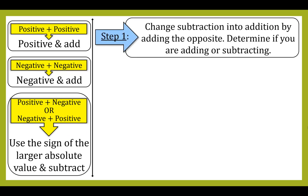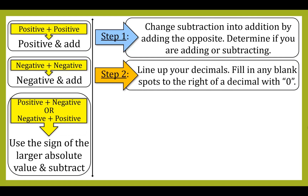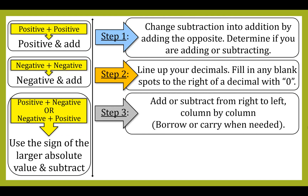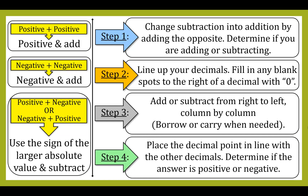Now let's look at the steps. Step 1: change subtraction into addition by adding the opposite, then determine if you are adding or subtracting. Step 2: line up your decimals and fill in any blank spots to the right of a decimal with zero. Step 3: add or subtract from right to left, column by column, borrowing or carrying when needed. Step 4: place the decimal point in line with the other decimals and determine if the answer is positive or negative.